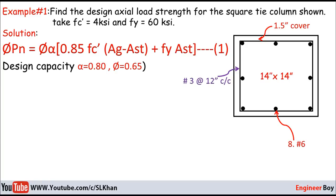Now let's calculate Ag. Ag is the gross cross-sectional area of the column. The size of the column is 14 × 14, so it's a square. Its Ag must be 14 × 14 = 196 in².